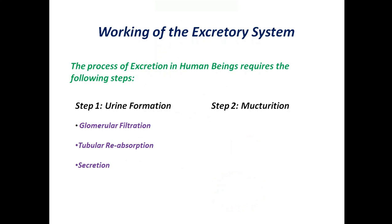Now let's discuss the working of the excretory system. The process of excretion in human beings requires the following steps: Step 1 is urine formation, which consists of glomerular filtration, tubular reabsorption, and secretion. Step 2 is micturition, which I discussed just now. Let's discuss these steps in detail.